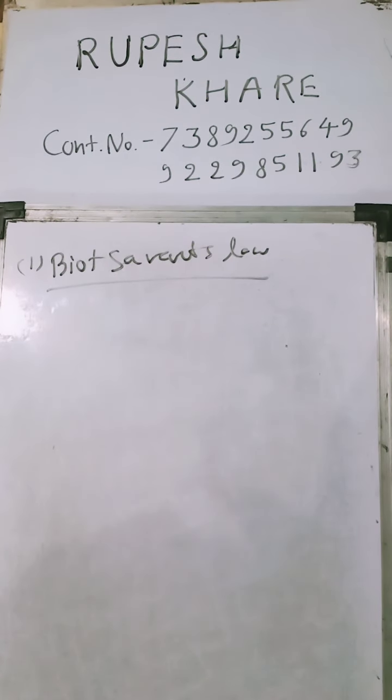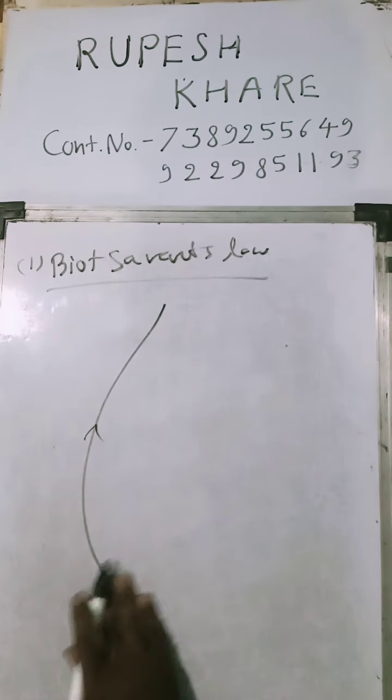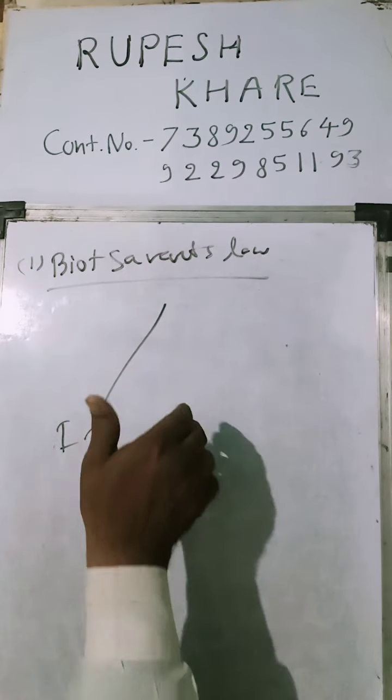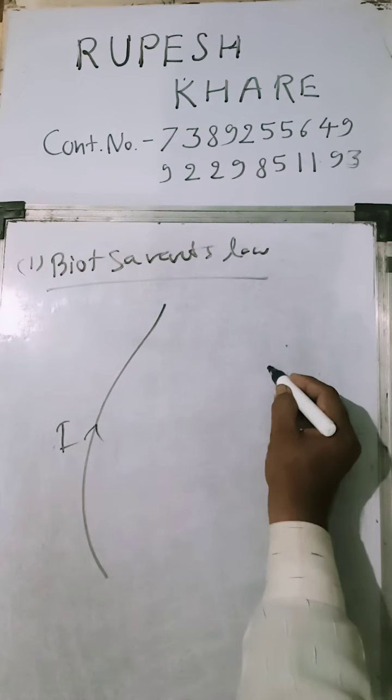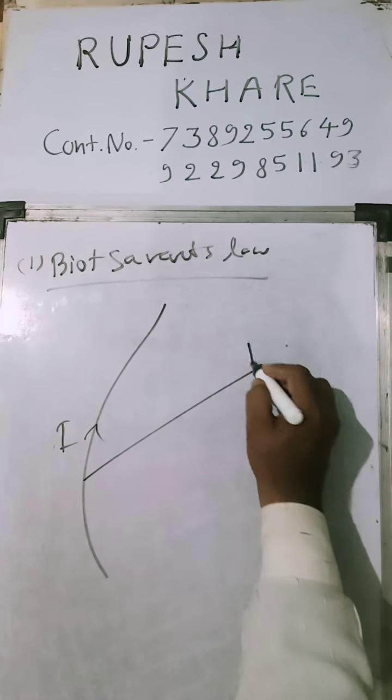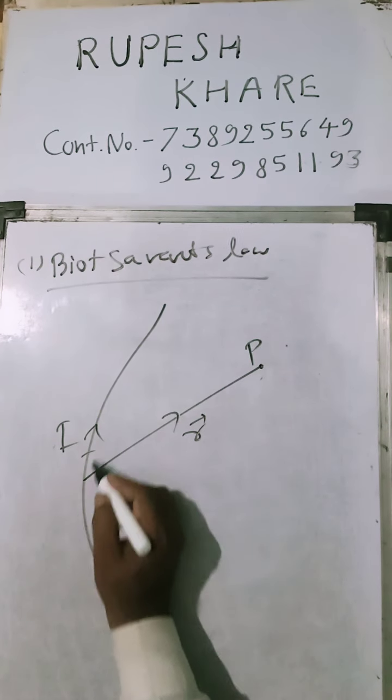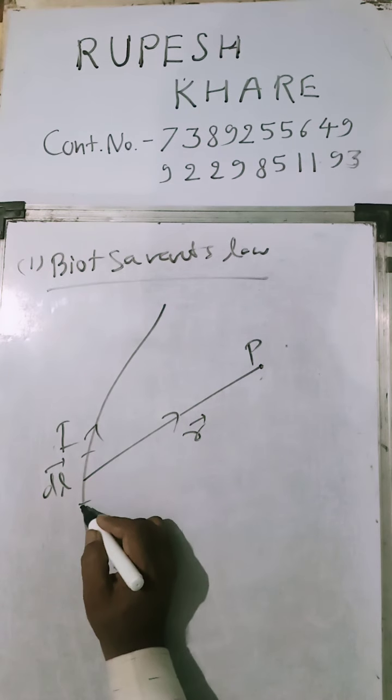If there is current flow, a magnetic field will develop. If there is current-carrying wire and current is flowing, we apply the right-hand thumb rule. At an r-distance, we consider dl, a small section of current. This is called the current element.